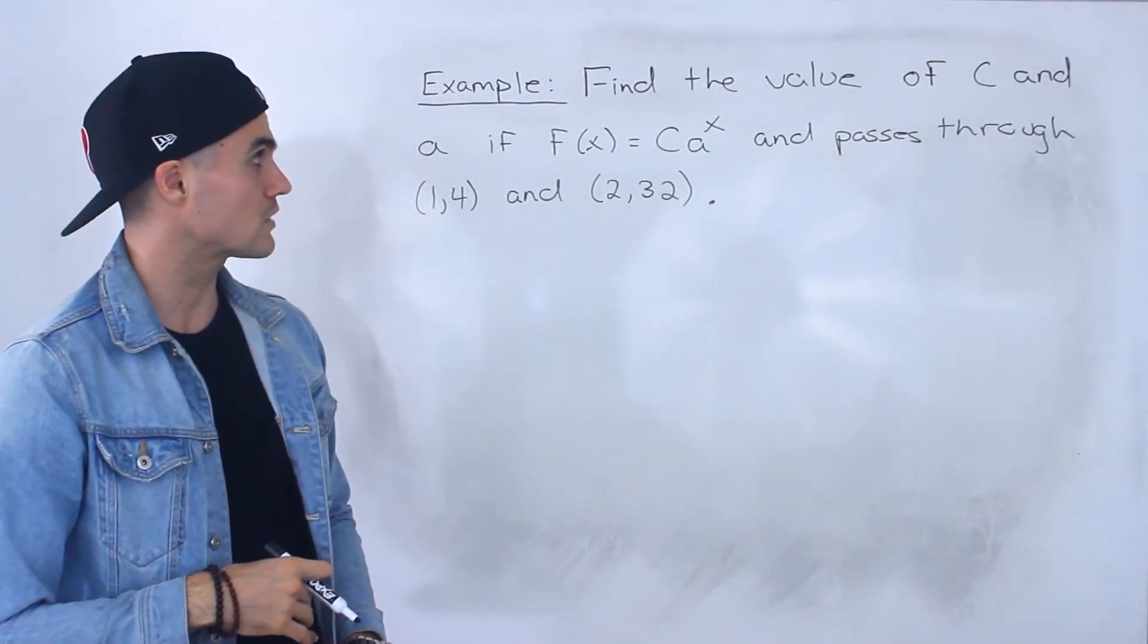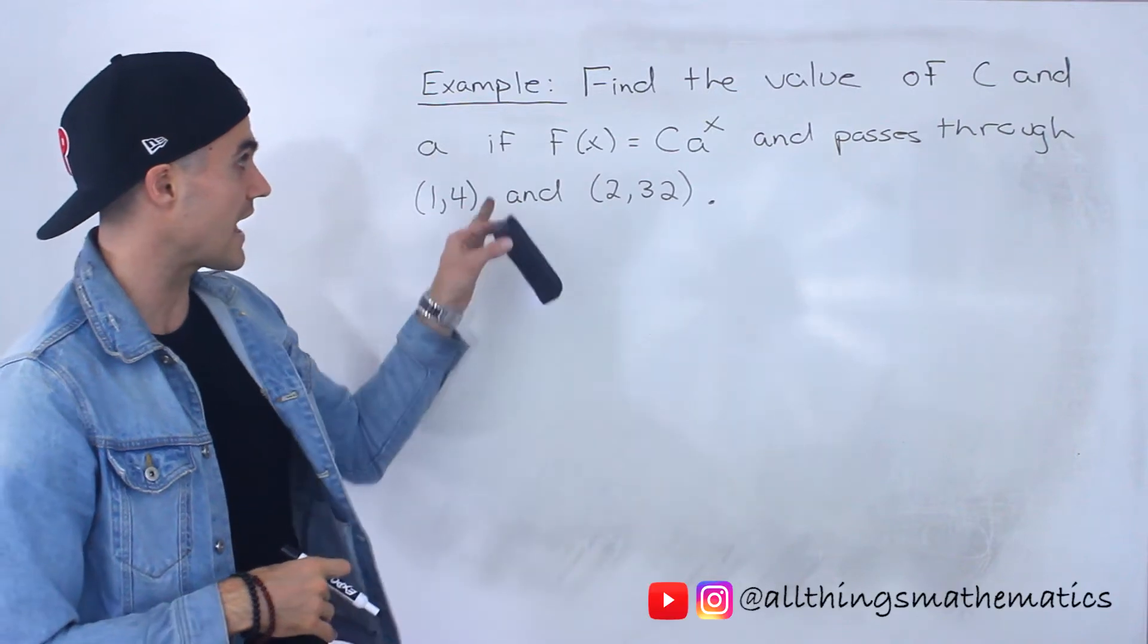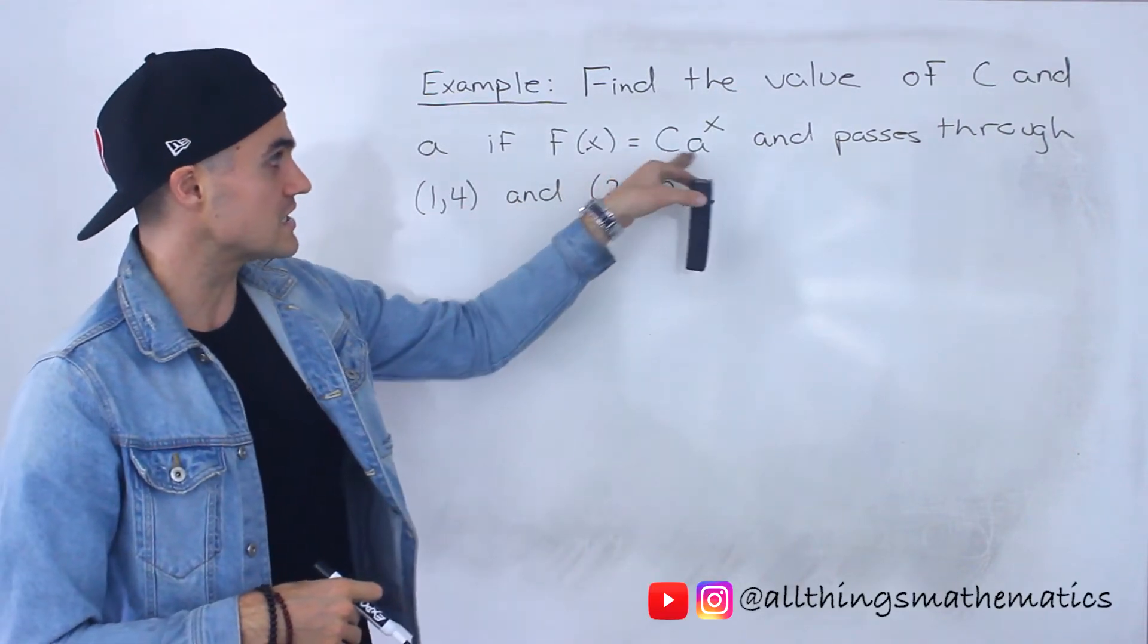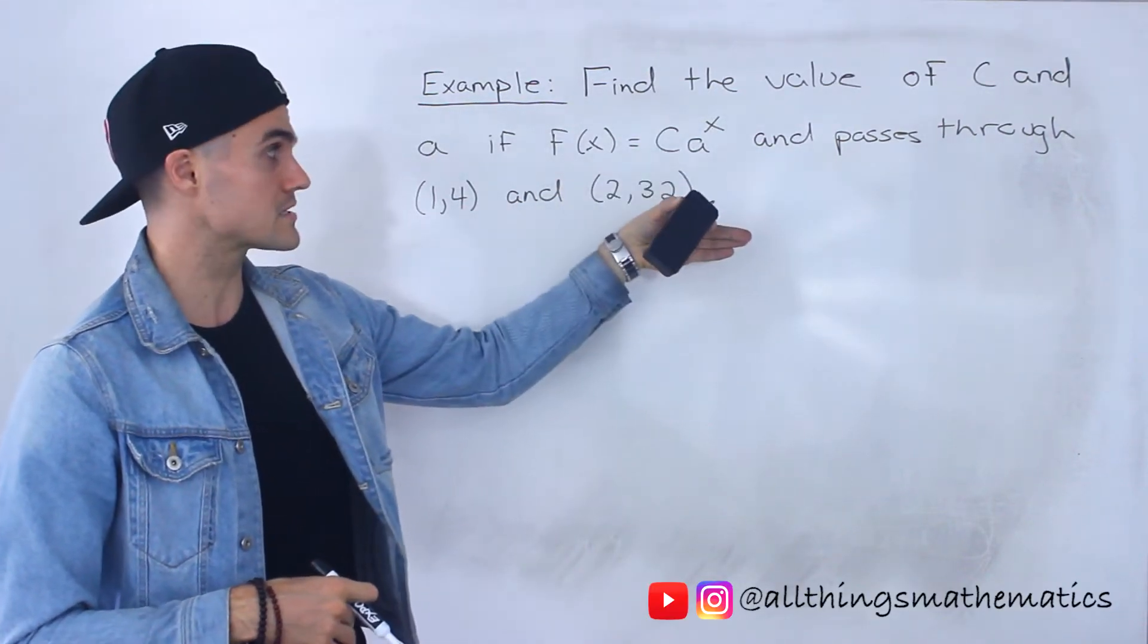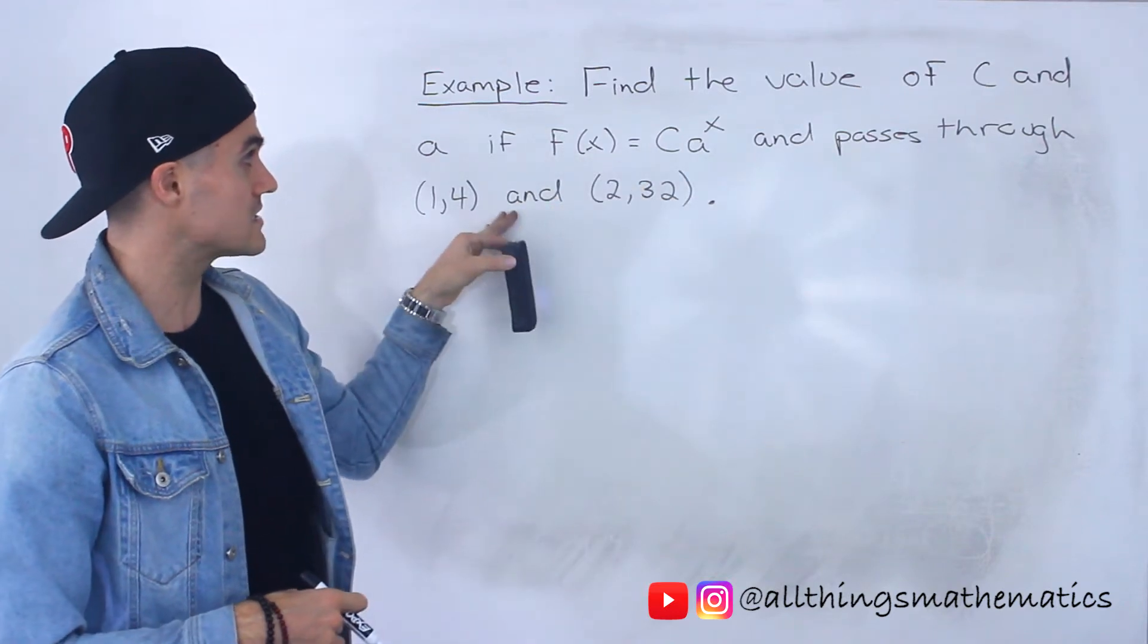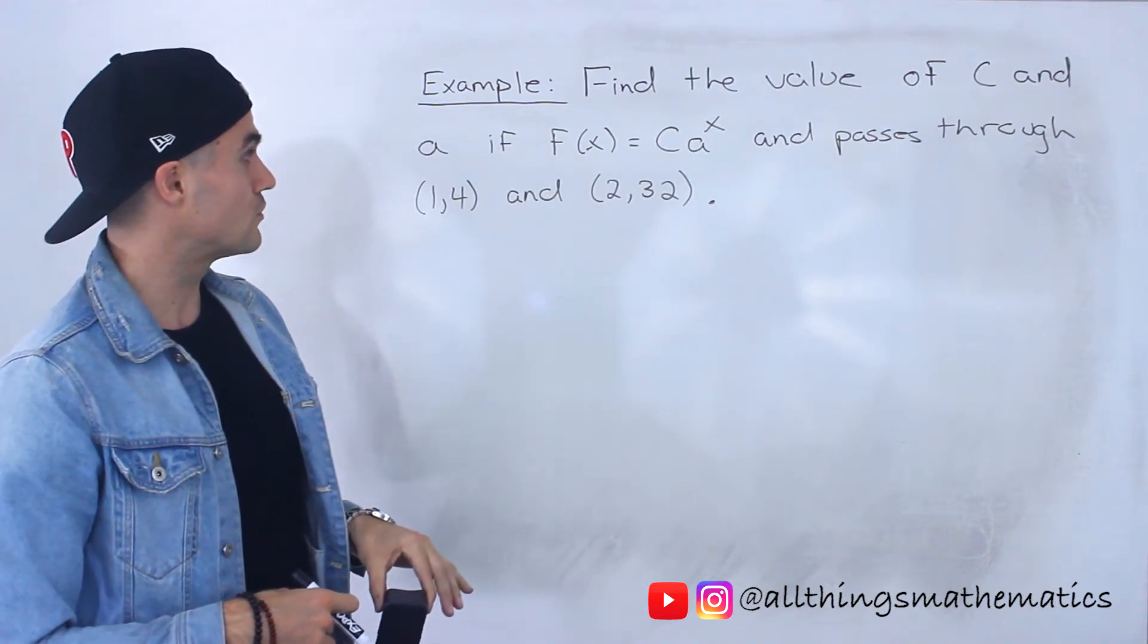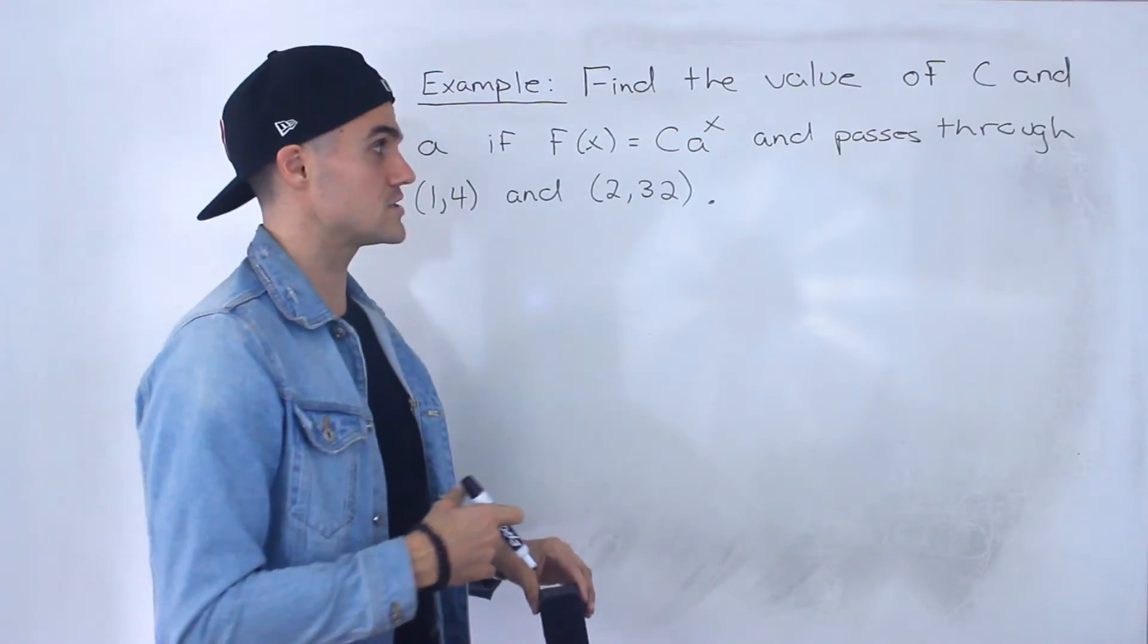And in this question, we're asked to find the value of c and a for this function c times a to the power of x if this function passes through the points 1 and 4 and 2 and 32.